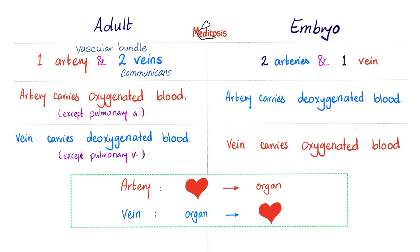Now this is my favorite slide. What's the difference between you right now and the embryo? Usually your arm will have one artery and one vein, or one artery and two veins — we call this the vascular bundle. However, when you were an embryo, especially in your umbilical cord, you had two arteries and one vein. In adults your artery carries oxygenated blood, but when you were an embryo the artery carried deoxygenated blood. Right now your veins carry deoxygenated blood, but when you were an embryo your veins carried oxygenated blood.